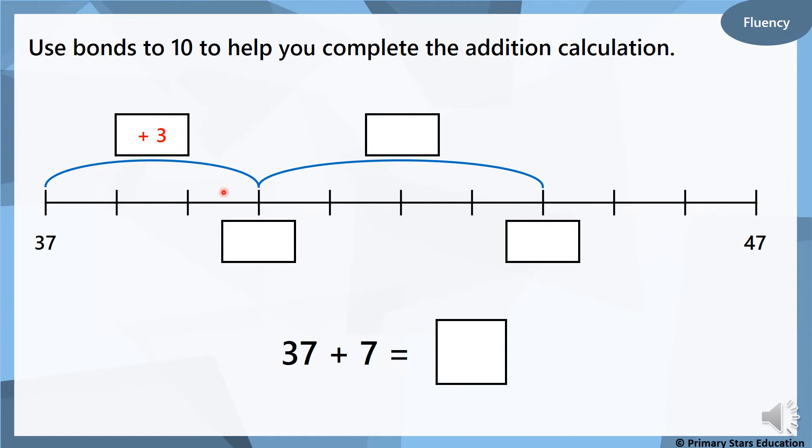So 37 add 3 would be 40. Now how many more do we have left? What's 7 take away 3? 7 in your head. Take away 3. 6, 5, 4. So we need to add on the remaining 4, which takes us to 44. So the answer is 44. So if you can use your number bonds to help you work it out, try and do that today. If you need to just do it in bounces of 1, that's absolutely fine too.